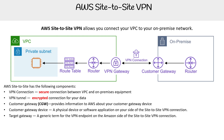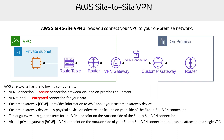We have the target gateway, which is a generic term for the VPN endpoint on the Amazon side of the site-to-site VPN connection. Looking at the diagram, I don't see the target gateway explicitly — it's perhaps what you're targeting, possibly within the virtual private gateway. I'm not the best at networking, but I know enough to get you through it.